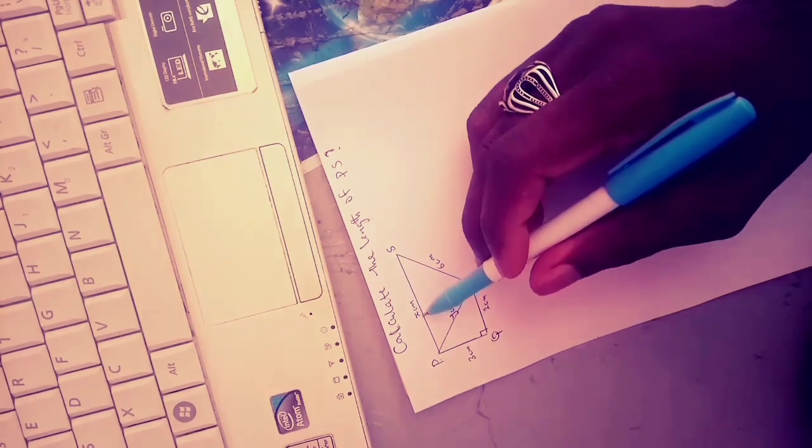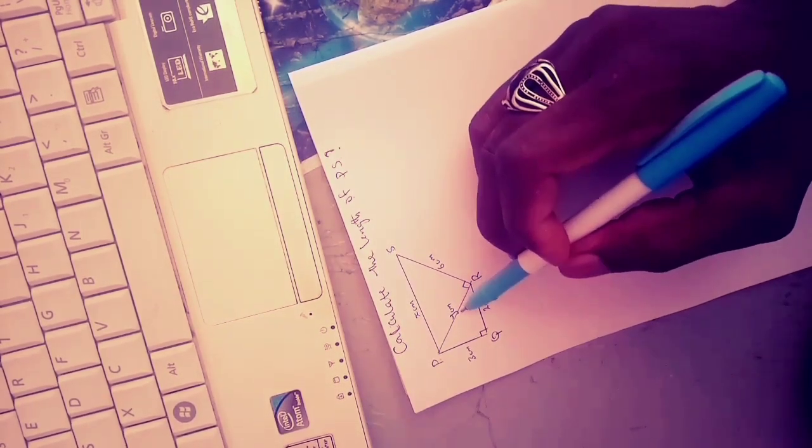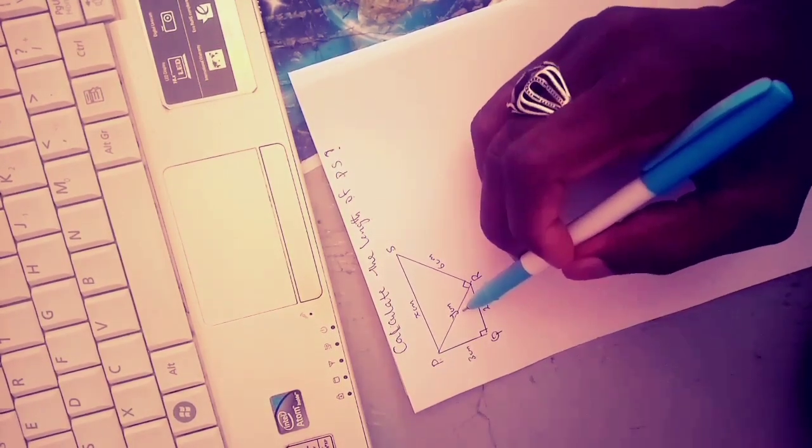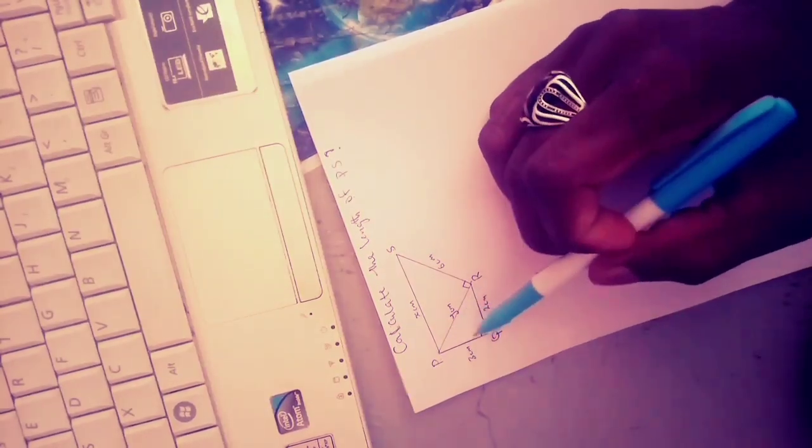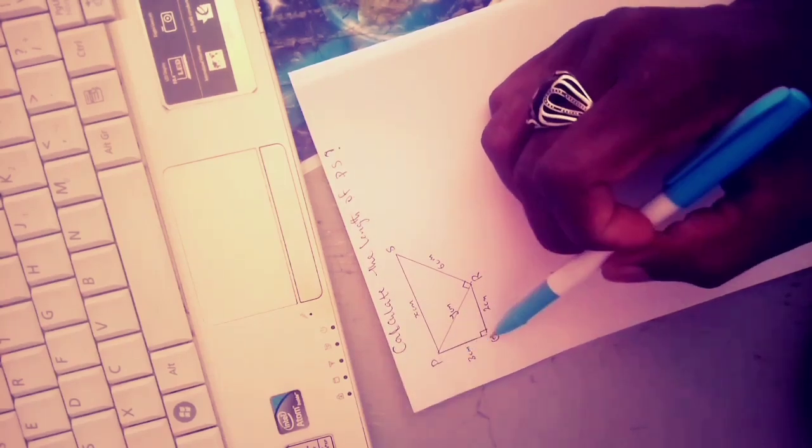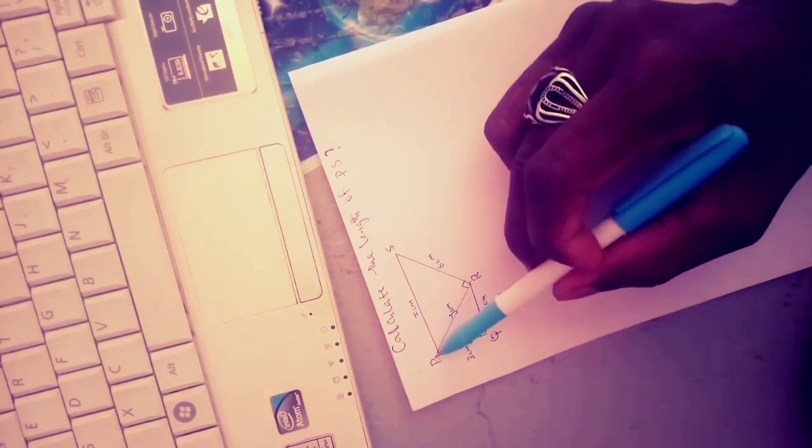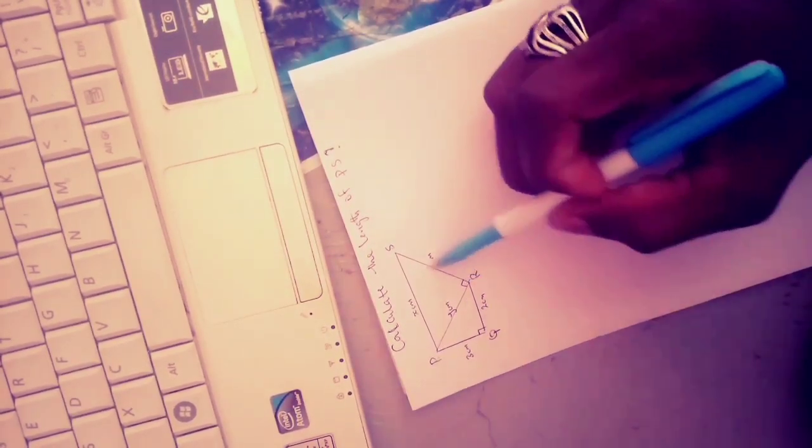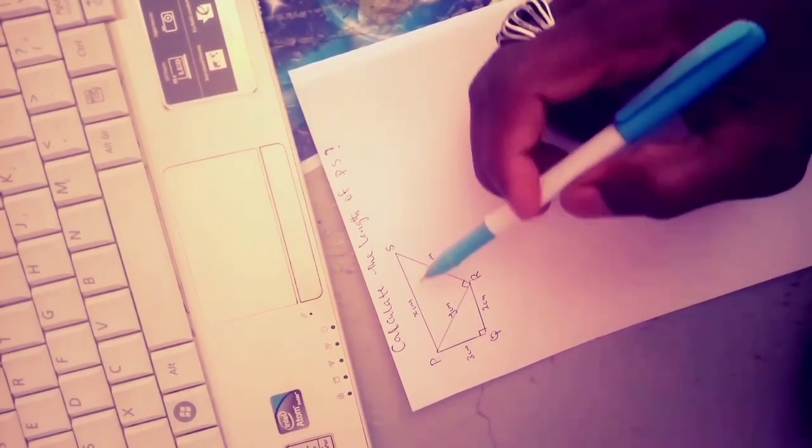Before you get your answer, you must first of all find y centimeters - you must first find this hypotenuse. As you can see, we have two triangles here. The first triangle is PQR, and the second triangle is PRS.